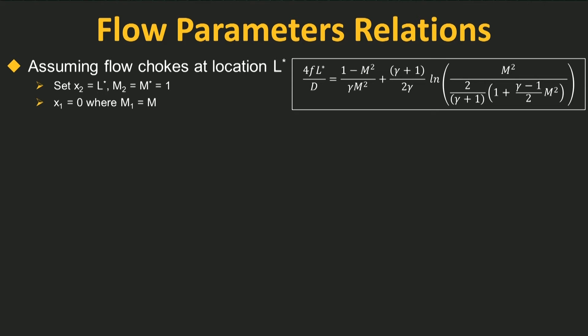This gives us a useful comparison, knowing that the flow is always going to reach the choked condition at some downstream location. It helps us rewrite all our expressions and flow variables with respect to that downstream location where the flow will choke. So let's assume that for a given starting condition, the location where the flow chokes downstream is at L-star. In the previous solution, we can set x2 to be L-star, where the Mach number M2 will now be M-star equals one, since the flow is choked. We set x1 to be the current location 0, and M1 to be equal to M. Substituting that into the final solution gives us this boxed equation.